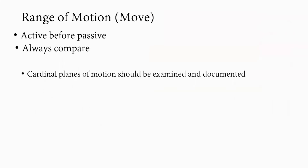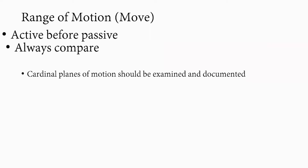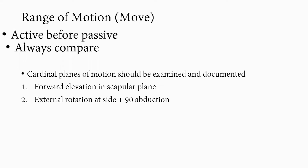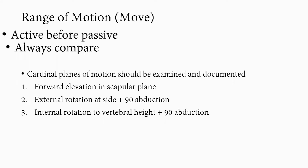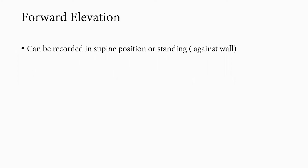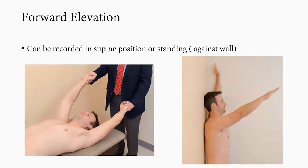Range of motion: always perform active before passive, and compare both sides, since not all individuals have the same range of motion. There are three cardinal planes of motion to examine and document: forward elevation in the scapular plane, external rotation both at the side and at 90 degrees of abduction, and internal rotation to the vertebral height and in 90 degrees of abduction. Forward elevation can be recorded supine or standing, done against the wall to prevent hyperextension of the back, and the arc the elbow makes in the sagittal plane is recorded.